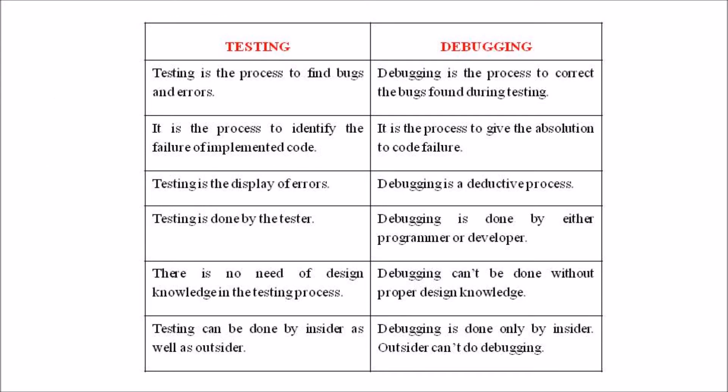Debugging tactics also include memory dump and profiling. When we come to the difference between testing and debugging, we can discuss the following points. Software testing is the process to find bugs and errors, while debugging is the process to correct those particular bugs found during testing.